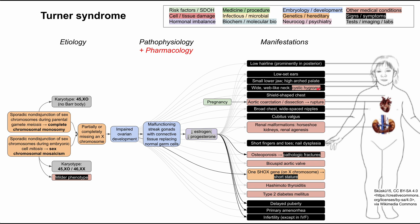Moving down below the neck, patients will have a shield-shaped chest that is typically more broad with wide-spaced nipples. There are a number of cardiac pathologies: you can have aortic coarctation, aortic dissection, and people with Turner syndrome are at risk for aortic rupture. This risk is further increased during pregnancy because pregnancy is a very high volume state, putting them at even more risk for aortic dissection leading to rupture. Bicuspid aortic valve is another cardiac problem that can occur.